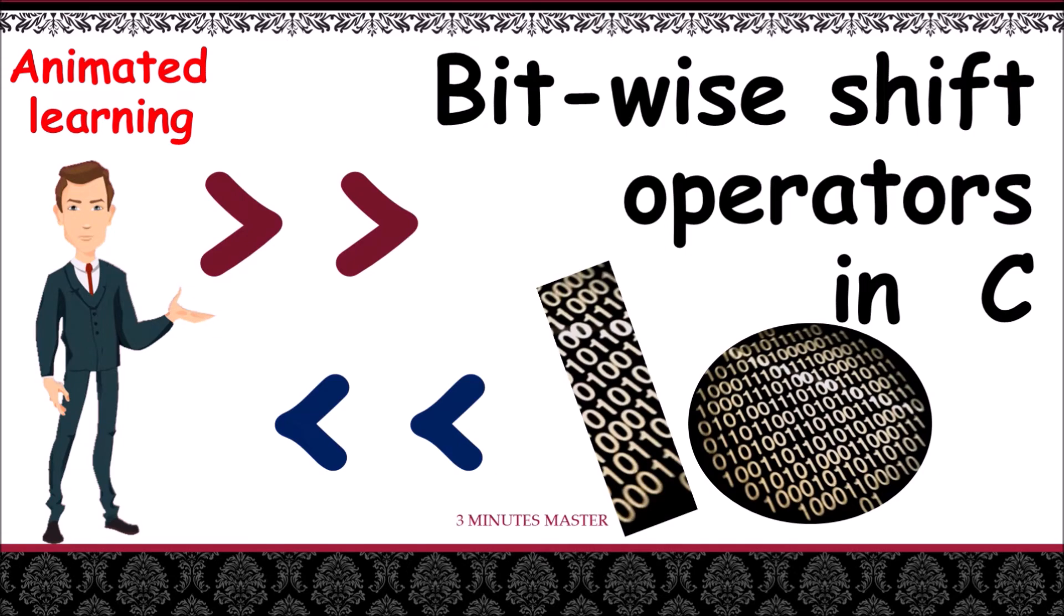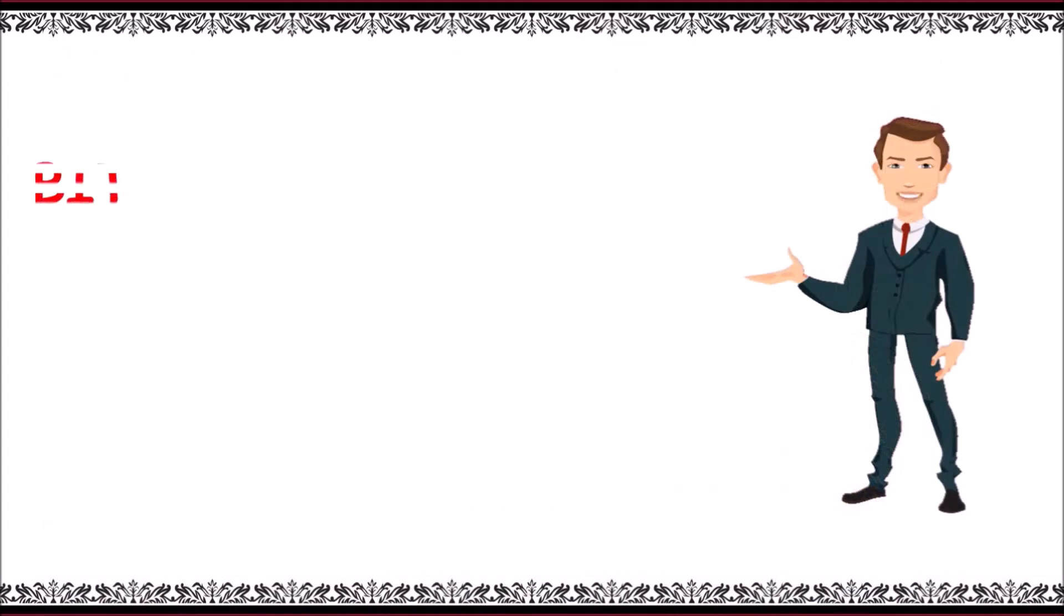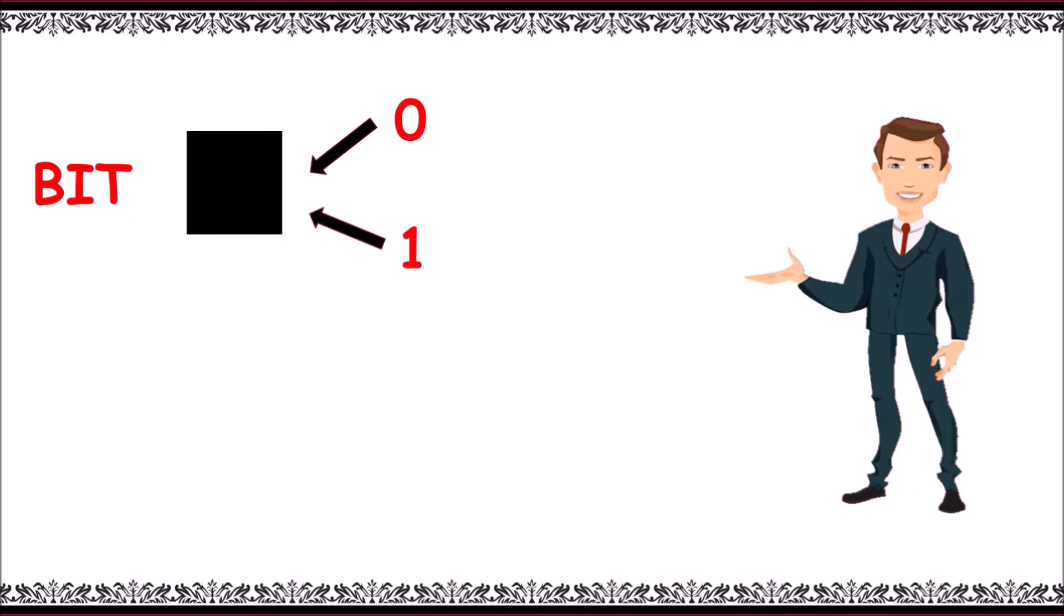Hello guys, welcome to 3mm. We'll explain bitwise shift operations. What actually is a bit? The state represented by a single binary value, either 0 or 1. For bitwise operations, consider A equals 5. We cannot perform these operations on 5 directly.